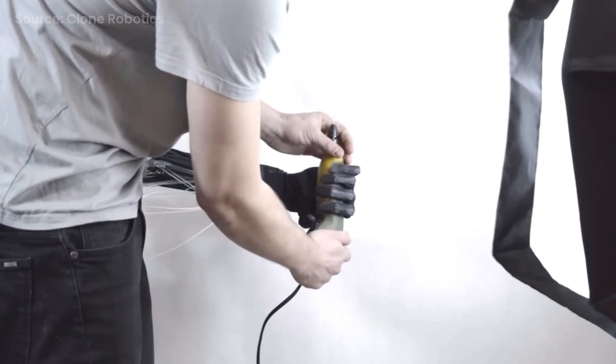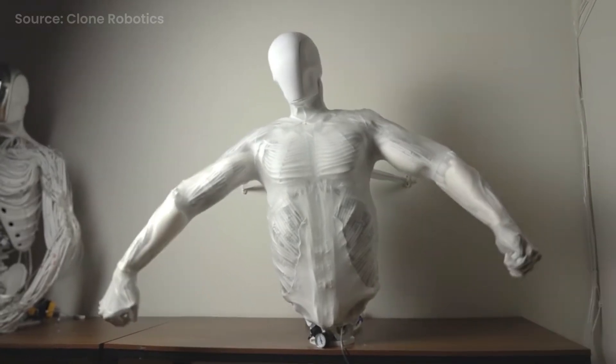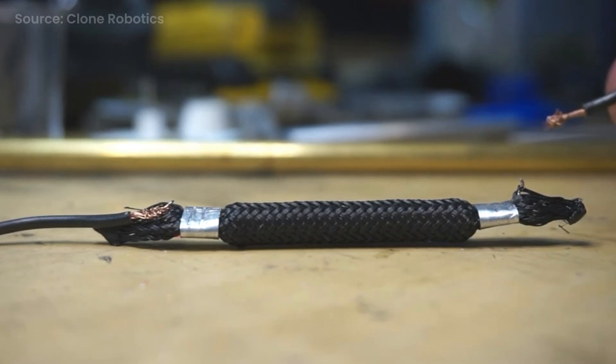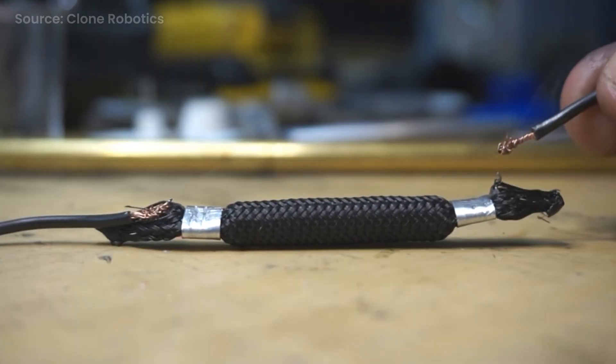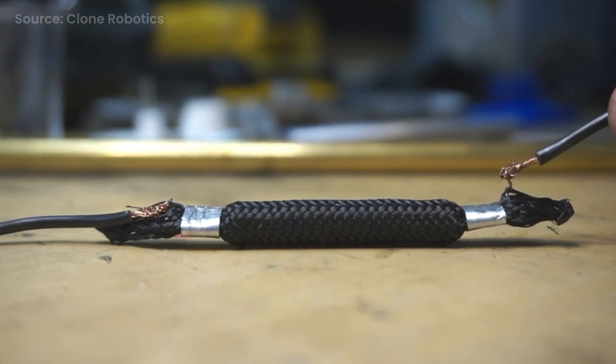Now this is all very impressive, but how have they done it? How has Clone Robotics been able to build this incredibly lifelike muscular system? Well, it's done through their own myofibre technology, which are these artificial muscle fibers that essentially mimic the way our muscles function.